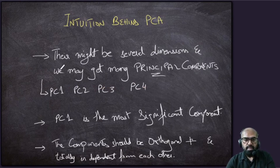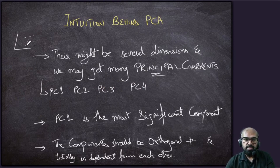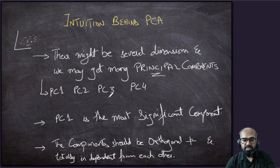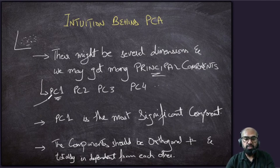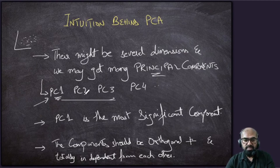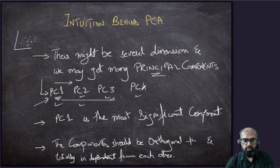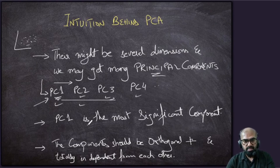Some points to note: there may be several dimensions, so we may get many principal components. In our example we had two-dimensional data, but in reality you may have many features or dimensions, so there may be PC1, PC2, PC3, PC4, and so on. PC1, the first principal component, is the most significant and covers most of the variance. After PC1, PC2 is next, then PC3, PC4, and so on. We can select PC1 and PC2 and ignore the rest depending on the values, which we'll discuss in subsequent sessions.